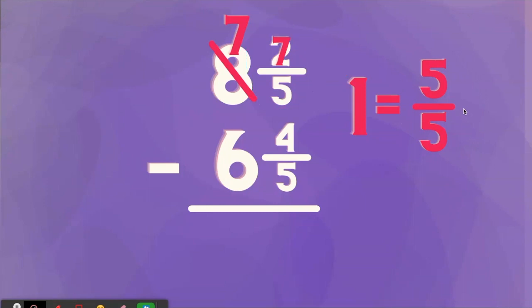Two-fifths plus five more will give us seven-fifths. Now we can subtract. We have enough. Seven-fifths minus four-fifths is three-fifths. Seven minus six equals one. Eight and two-fifths minus six and four-fifths is one and three-fifths.